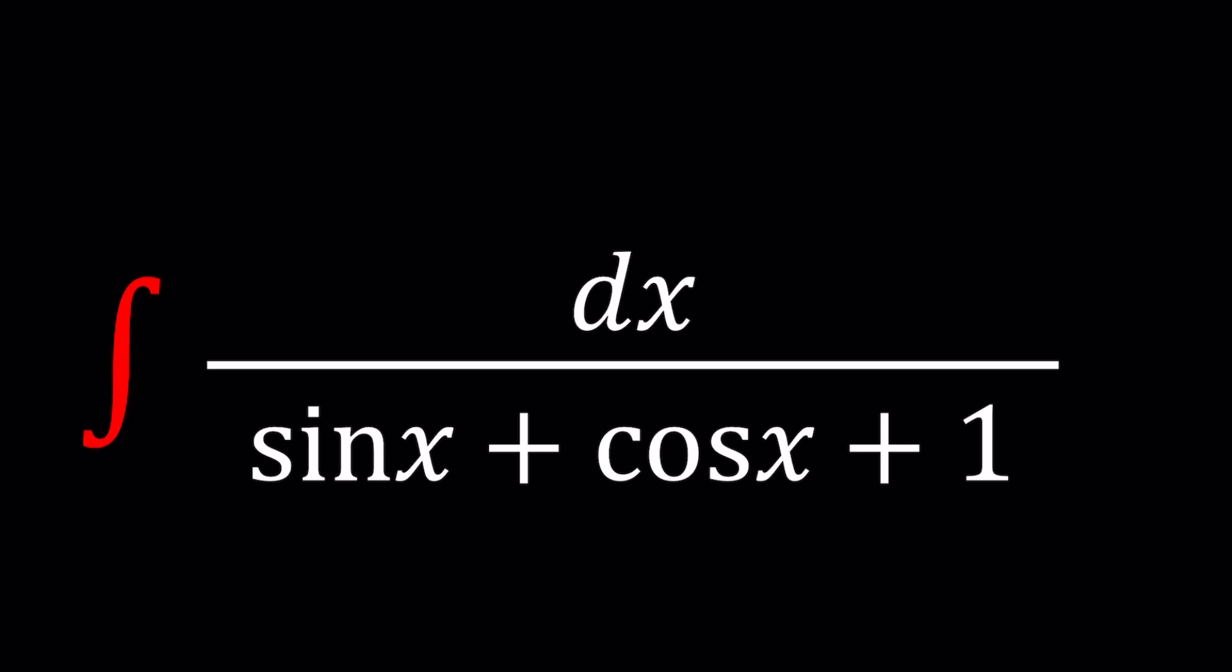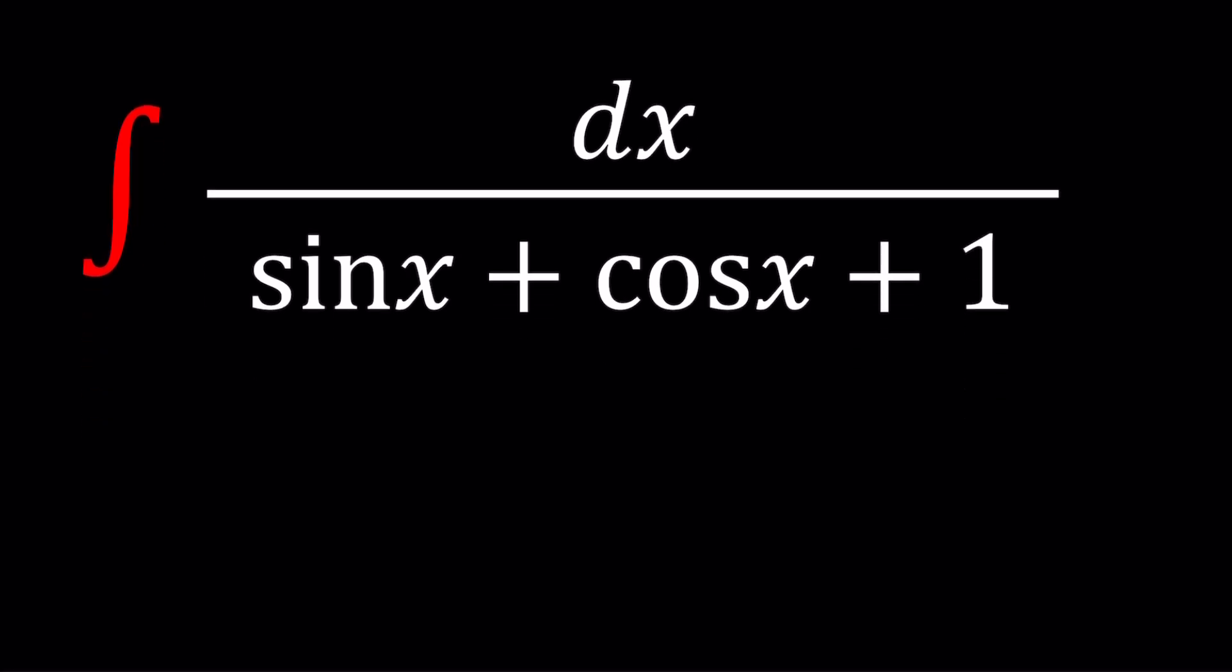Now, to be able to integrate these kinds of functions, like rational functions of sine and cosine, we use a special substitution, which is called, I believe, Weierstrass substitution, and this is how it goes. So, we're going to go ahead and set z equal to tangent x over 2. This might look real weird because we don't have x over 2 in the equation, but guess what?